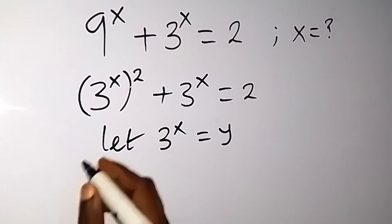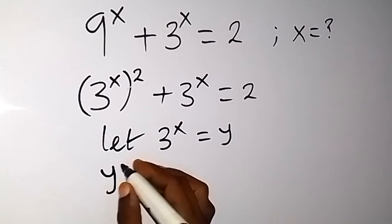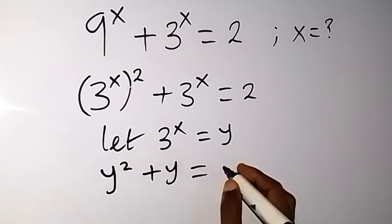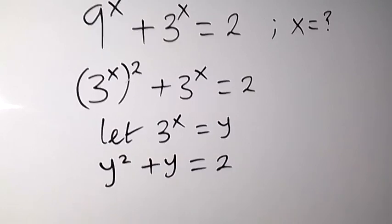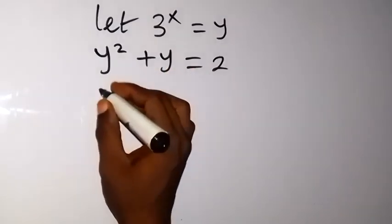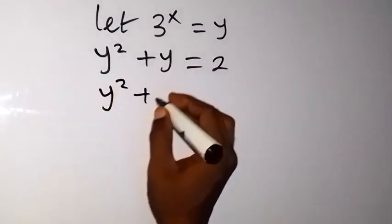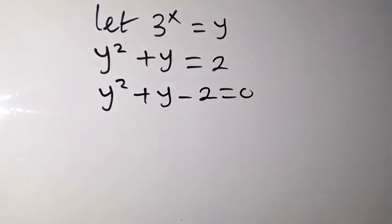Then by the time you replace 3 raised to power x with y here, we have y squared plus y equals to 2. We can use this to form a quadratic equation. By bringing 2 to this side, we have y squared plus y minus 2 equals to 0.